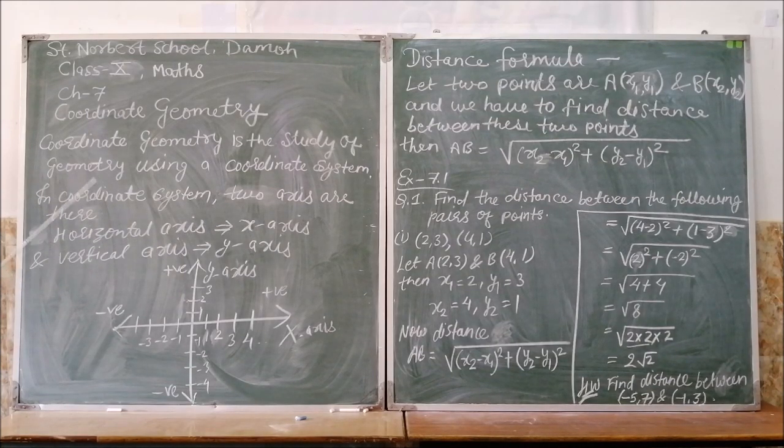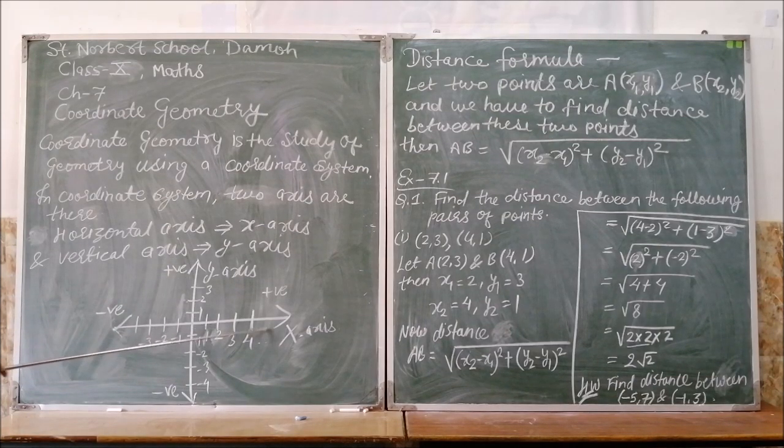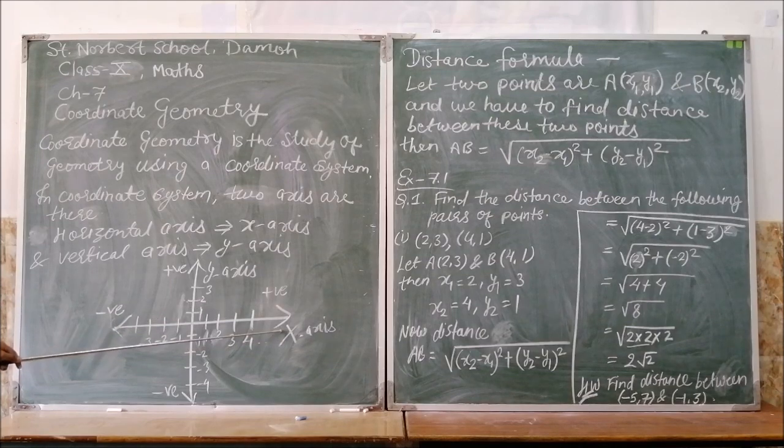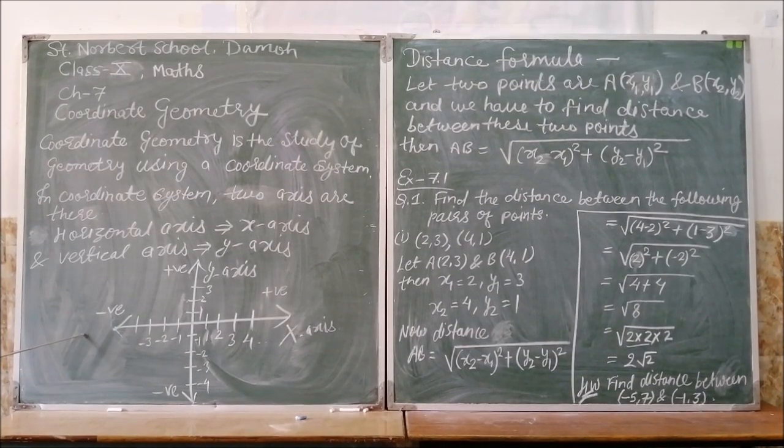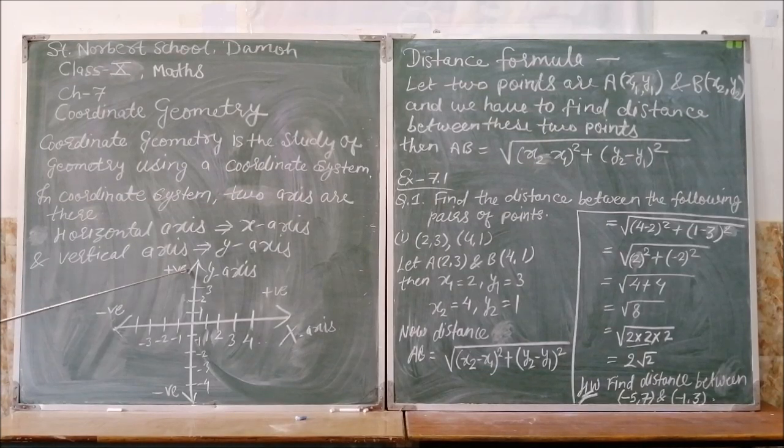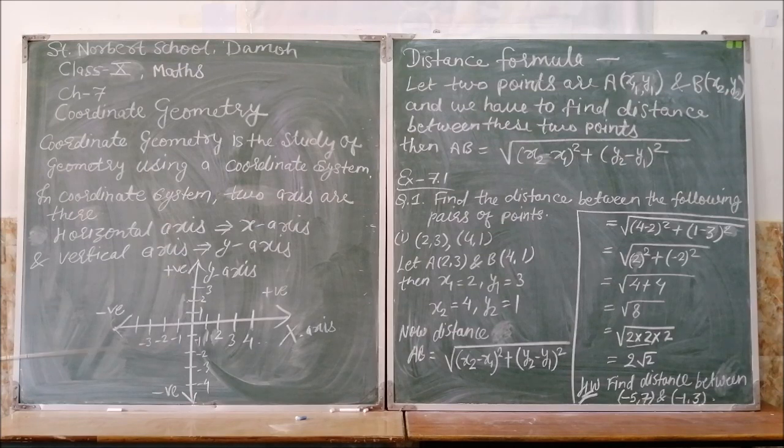You all know there are two axes. First is the horizontal axis, that is the x-axis, and another one is the vertical axis, that is the y-axis. All the positive values of x-axis are at the right side, all the negative values are at left side. Same on y-axis, you will see all the positive values are above and all the negative values at lower side.